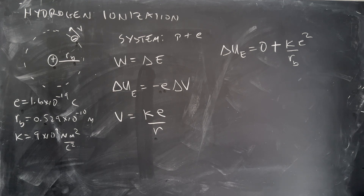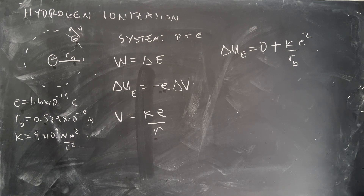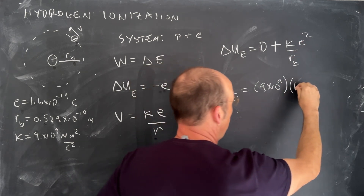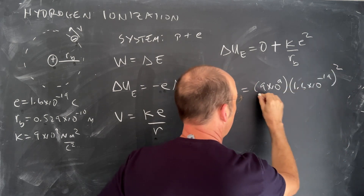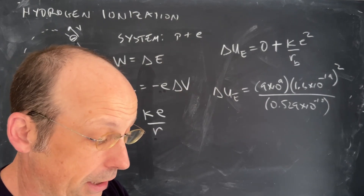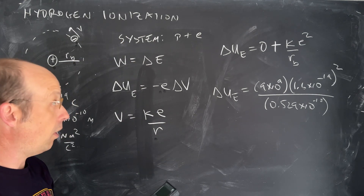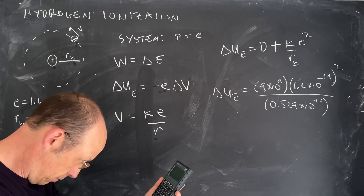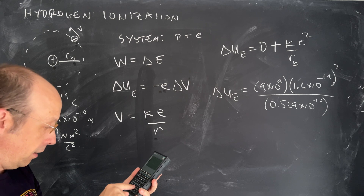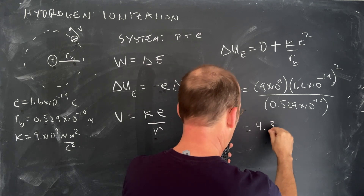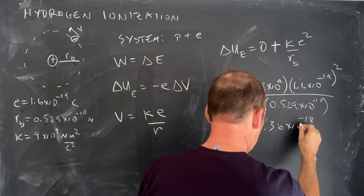So that is my change in potential energy to get that electron far away. Let's go ahead and calculate that. ΔUe is going to be K = 9×10⁹, times e² = (1.6×10⁻¹⁹)², divided by 0.529×10⁻¹⁰. Let's put that in the calculator: 9×10⁹ times 1.6×10⁻¹⁹ squared, divided by 0.529×10⁻¹⁰. And I get a change in energy of 4.36×10⁻¹⁸ joules.